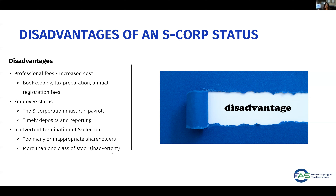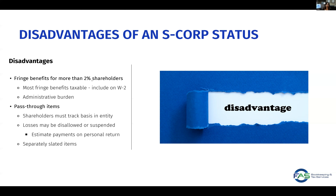There is also inadvertent termination of an S-election. If you have more than one class of stock — which can result when two shareholders have distributions where the percentage is inadvertently changed — that can result in another class of stock and cause termination, since an S-Corporation can only have one class of stock. If you have any inappropriate shareholders, like non-residents, that would also inadvertently terminate the S-election. The other big issue is fringe benefits: for more than two percent shareholders, fringe benefits are mostly taxable and included on the W-2, creating additional administrative burden.